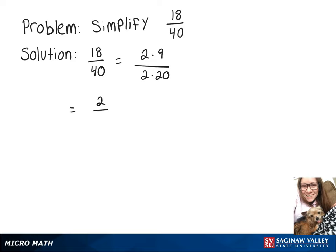We can then rewrite that as 2 over 2 times 9 over 20. And since 2 over 2 is just 1, we can cross that out, and our simplified answer is 9 over 20.